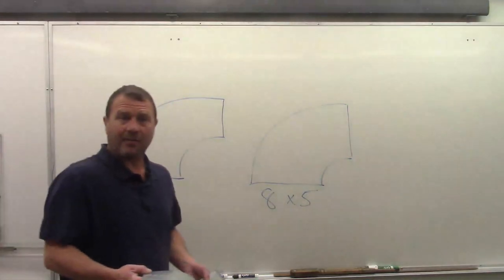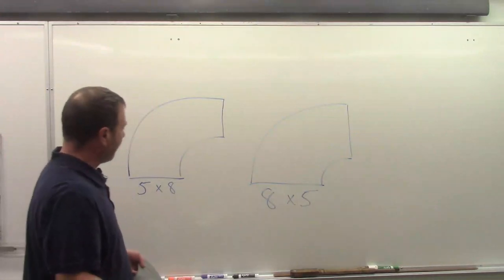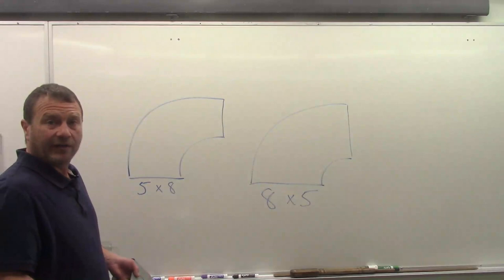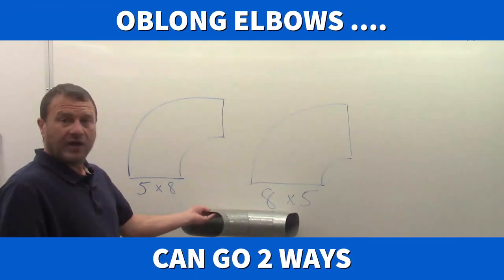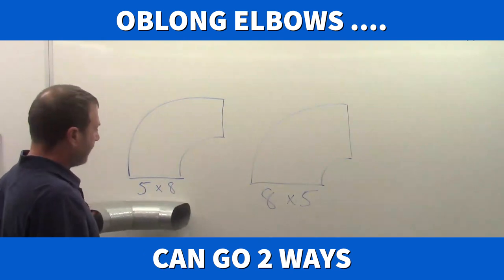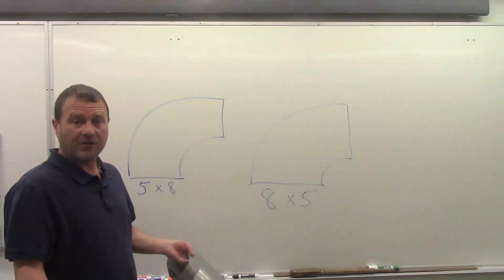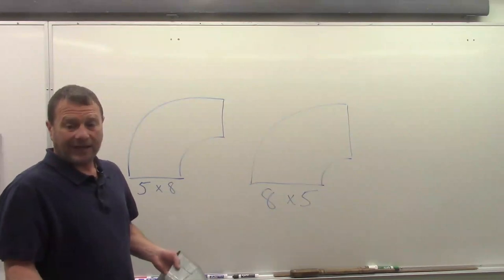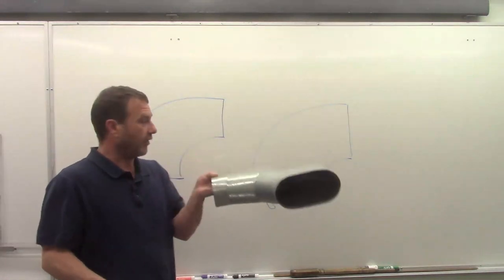Now we have a couple of examples of an oblong elbow. And you can see on the board, if we just had what we have there, it's just going to look like a radius throat, radius heel elbow. Because we've got two numbers with it, we can't tell at this point what that shape actually is. So we assume that it's rectangular. So these ones are not. They're going to be sort of an oval, oblong, oblong we call them.